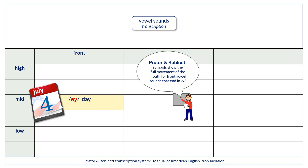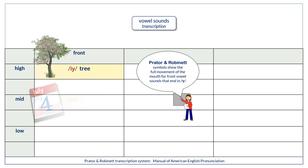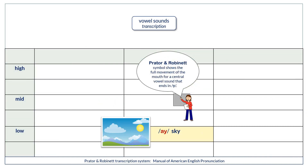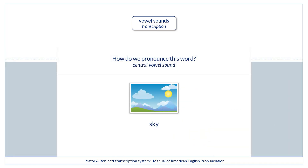A - day. E - tree. How do we pronounce these words? A - day. Three. Eye. Sky. How do we pronounce this word? Sky.